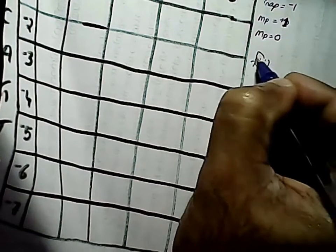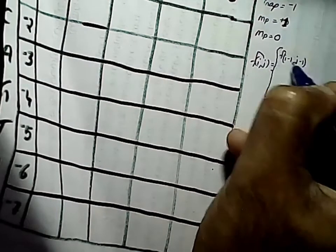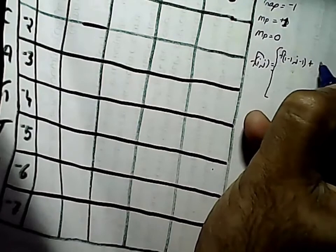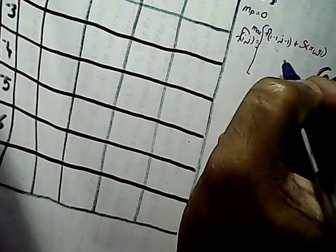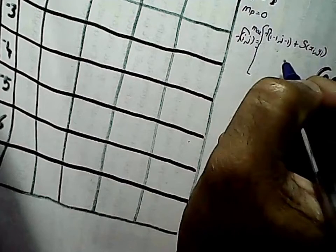Now we have to fill the cells in the table, i.e., the F(i,j) value has to be filled. The first possibility is we take the value from the diagonal element above to the left and add the match bonus or mismatch penalty for the two nucleotides along the axis, i.e., F(i-1, j-1) is the diagonal element plus S(xi, yi), where we are adding either the match score or the mismatch score.